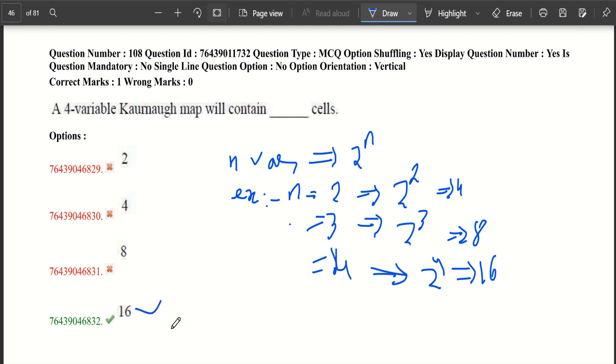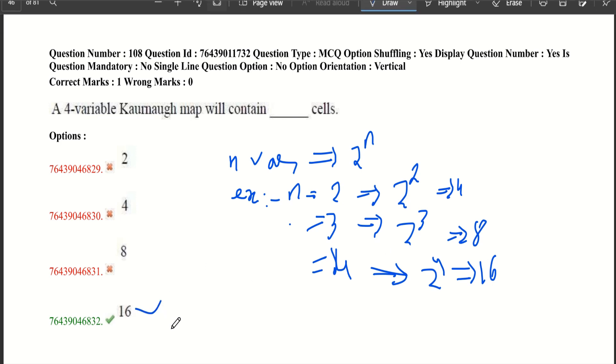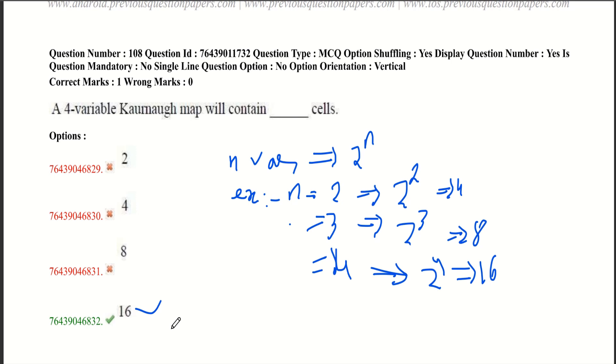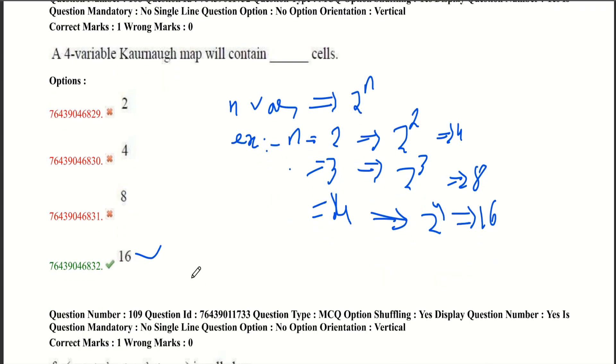And in this example, it is 4, so it is 2 power 4, which is 16. This is the correct option. If you don't remember the formula, you can draw a K-map for 4 variables and count the number of cells in them.